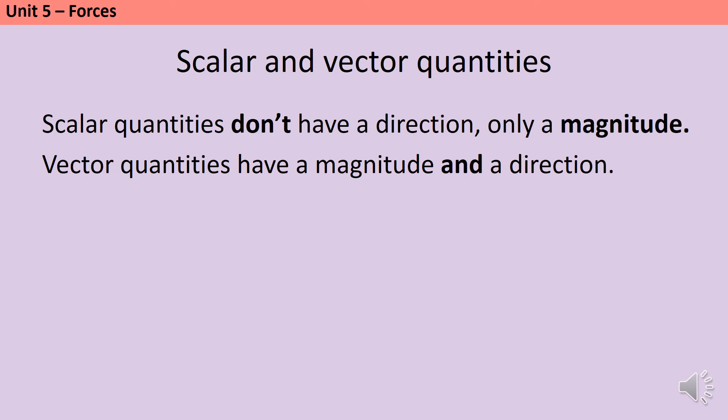Vector quantities still have a magnitude and they still have a numerical component, but their direction is important. And if the direction changes, that affects what happens next. If you think about forces, like pushing a box, if I push a box to the right and I push a box to the left, then what happens next is different. The box will move differently. And that tells me that forces are an example of a vector quantity.